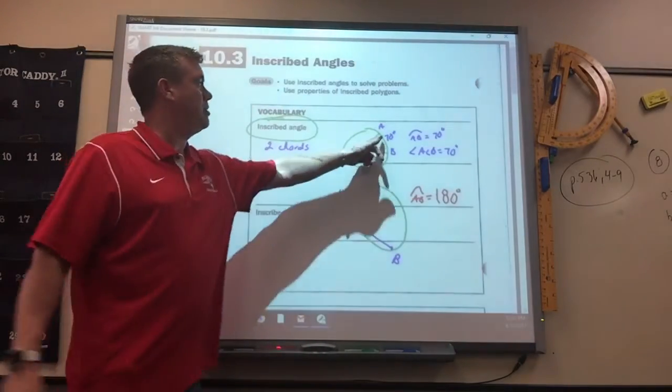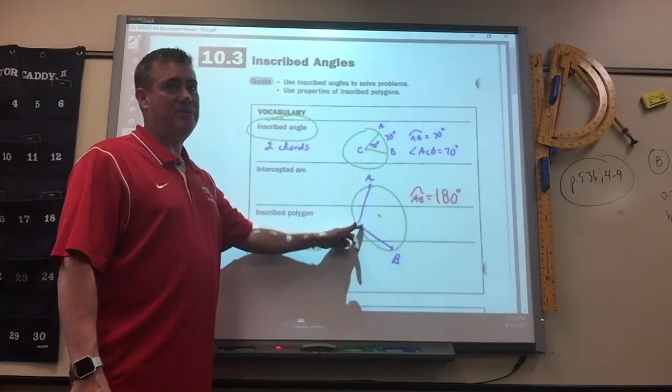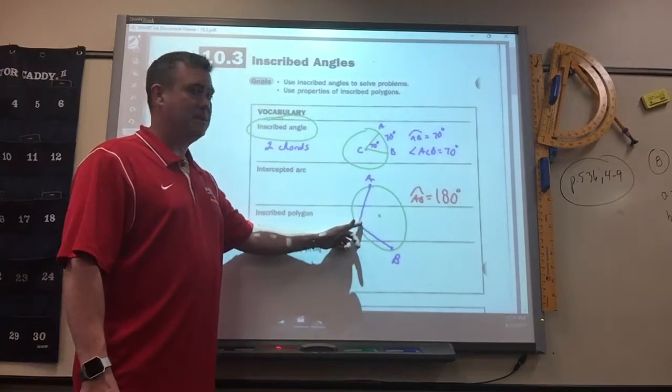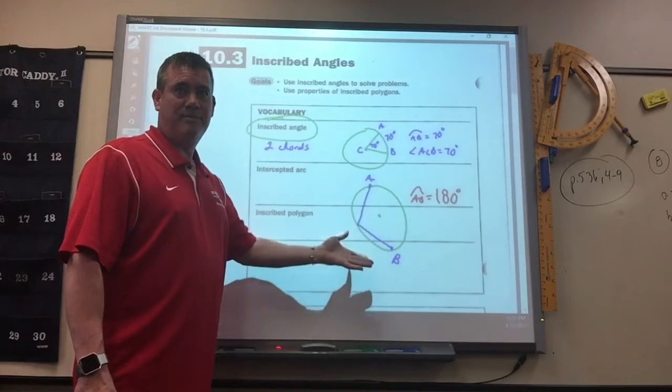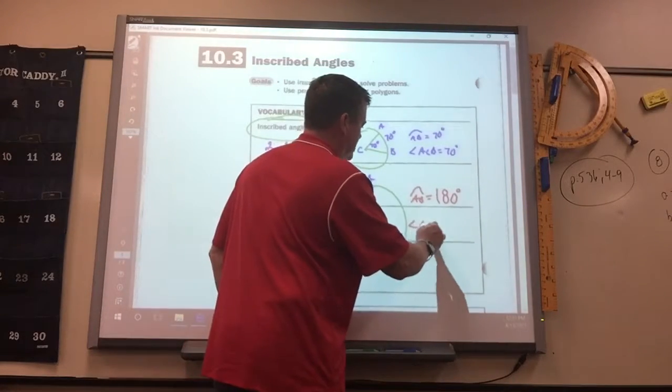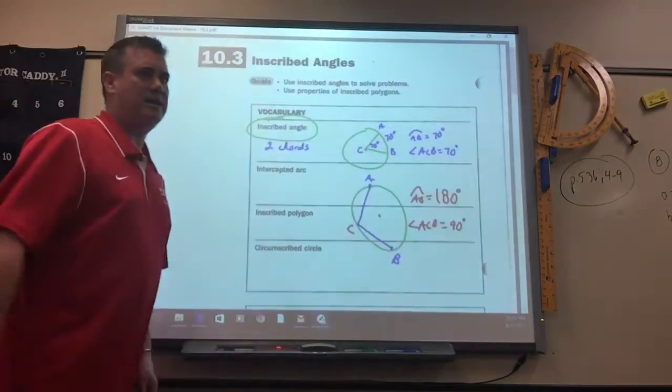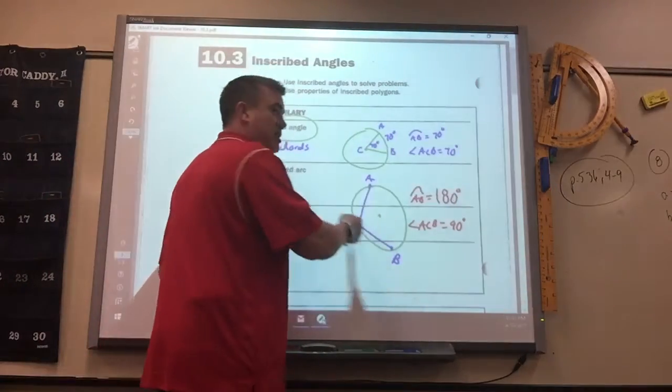Now you can tell here, the central angle and the arc are the same. They're obviously not the same, right? Because that's not 180. If you had to guess what it is, it's 90. Angle ACB is 90. So that's the whole thing today. Is it just half? It's half, right.